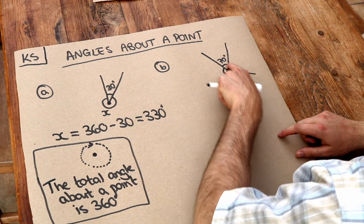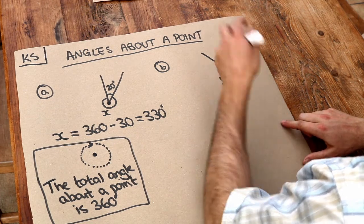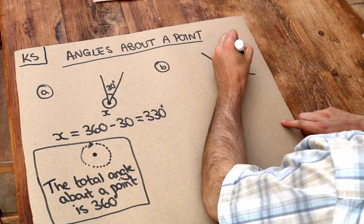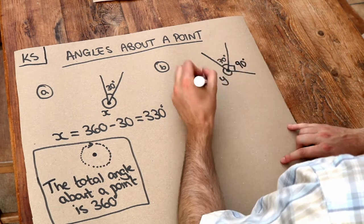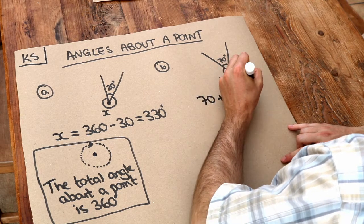So let's add up the two angles we've got here so far. That's 70 degrees. And that angle here, remember that square symbol is a right angle, which means 90 degrees. So let's add those two first. 70 plus 90 is 160 degrees.